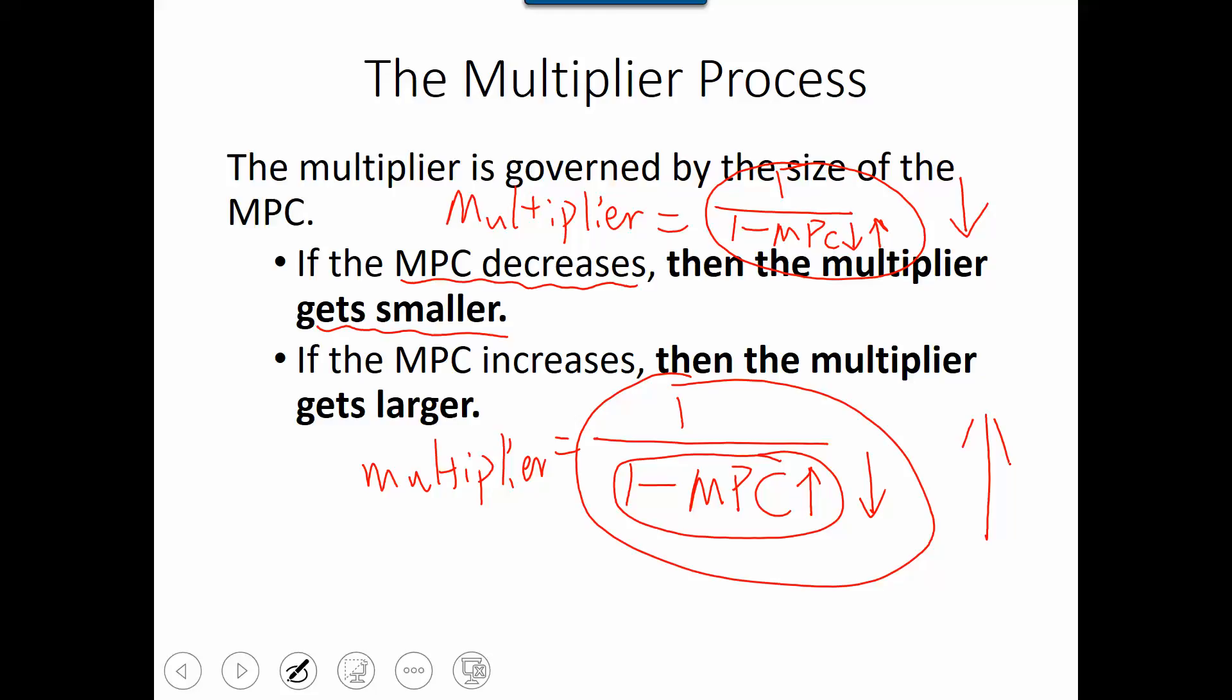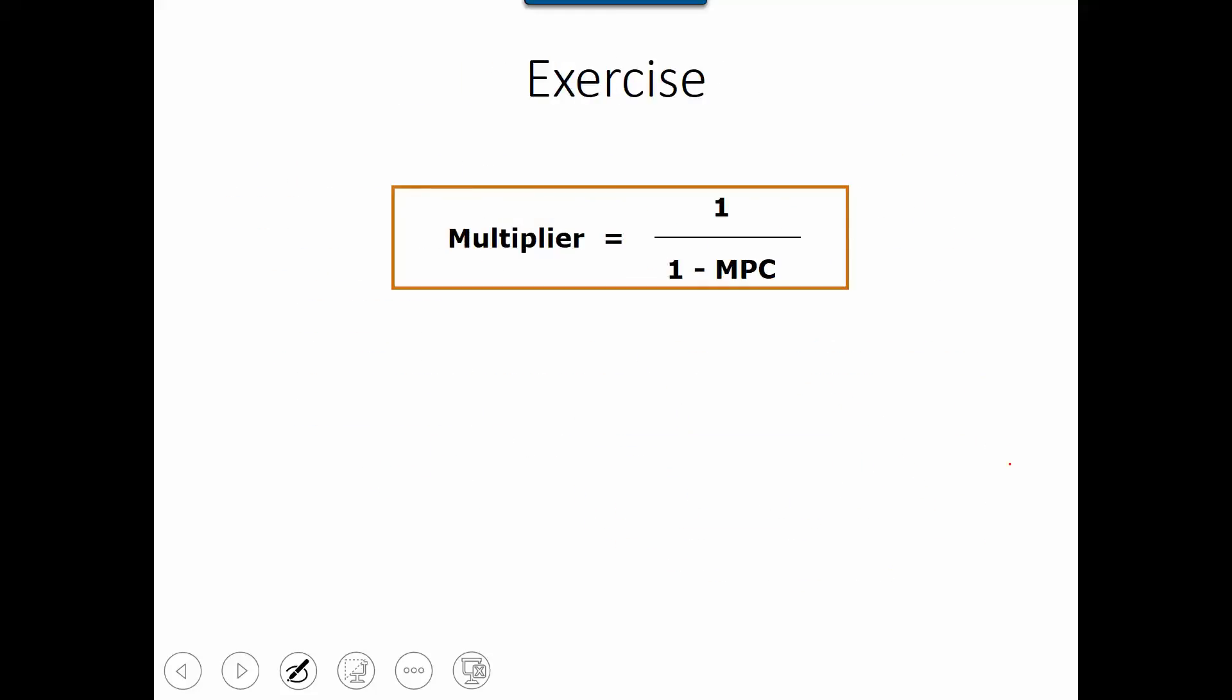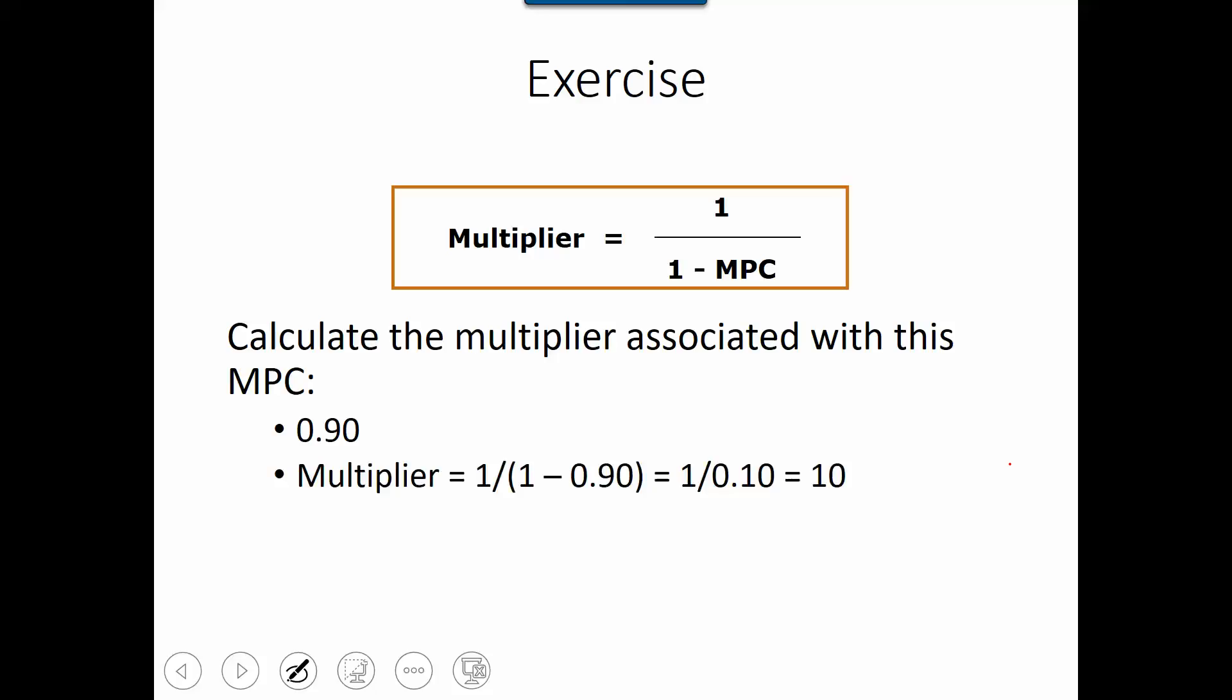So now let's do some practice together, how we calculate the multiplier. So the formula multiplier we already know is equal to 1 divided by 1 minus MPC. So calculate the multiplier associated with this MPC. So I'll give you 13 seconds. So did you get 10? So we plug in MPC 90% to the formula. So we will have 1 divided by 1 minus 90% and we will get 10.